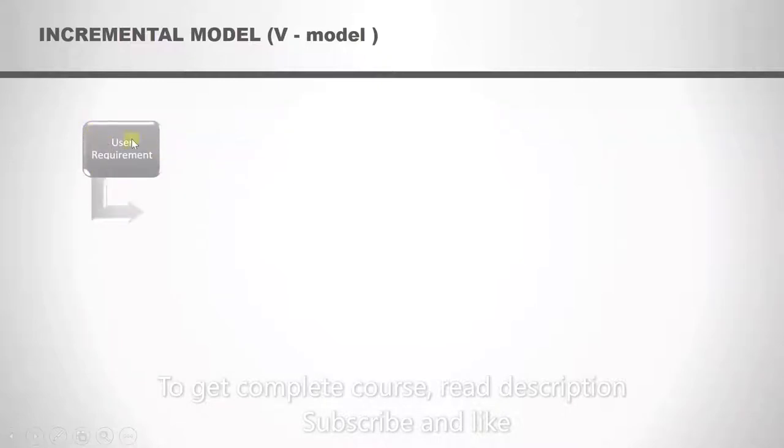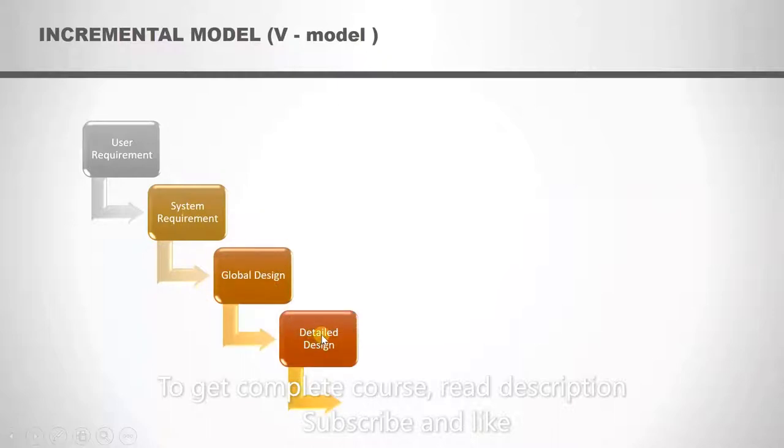First we have a user requirement which is provided by the customer. Then from the user requirement we write the system requirement. Once the system requirement is in place we write the global design and the detailed design. Once the design is done we will start implementing the software. These are the steps in this development activity.